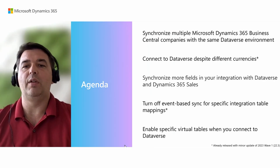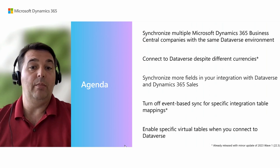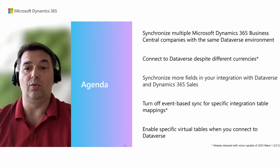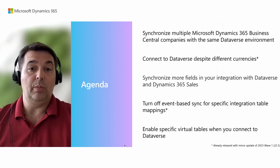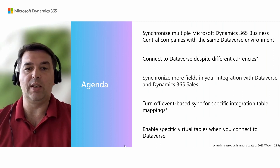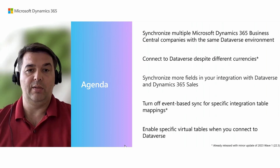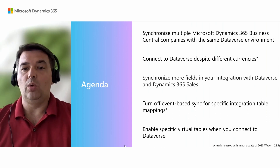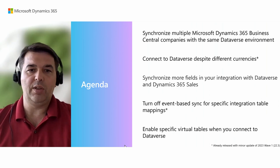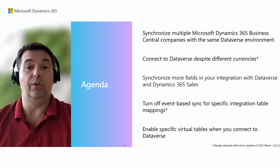This session's agenda covers the following five improvements introduced in 2023 Release Wave 2, and some you might have missed as they were introduced in July as part of minor updates for 2023 Release Wave 1. We'll talk about how to connect and integrate Business Central with Dataverse and Dynamics 365 applications in configurations involving multiple environments, multiple companies, and different base currencies. We'll also walk through how users can synchronize more data out of the box through additional field mappings without a developer, and how to better control data synchronization and enable virtual tables.